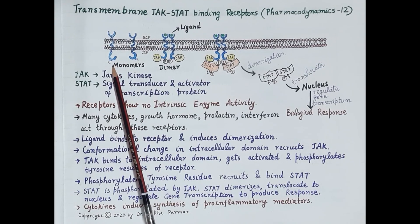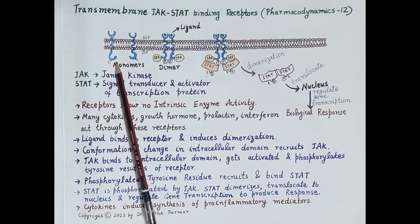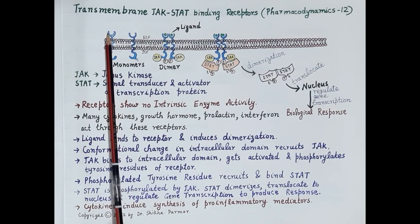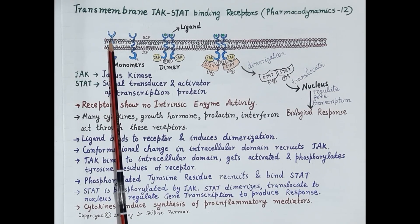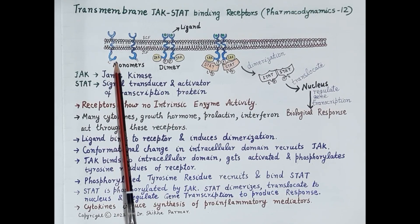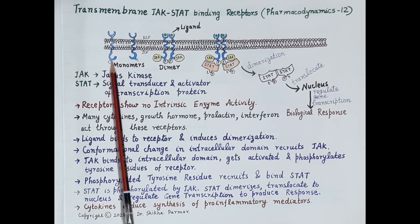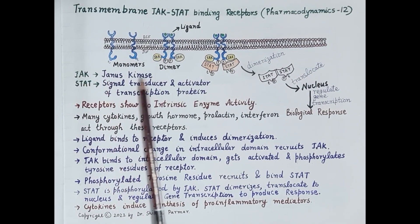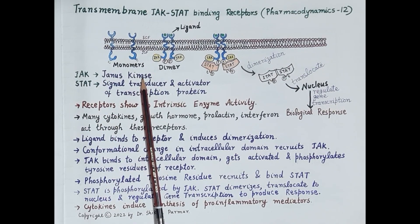This is the structure of the transmembrane JAK-STAT binding receptor. This receptor exists as a monomer. Transmembrane refers to across the cell membrane. As shown in this diagram, a part of the receptor is present outside the cell membrane, part is embedded in the cell membrane, and part is present on the intracellular side of the cell.